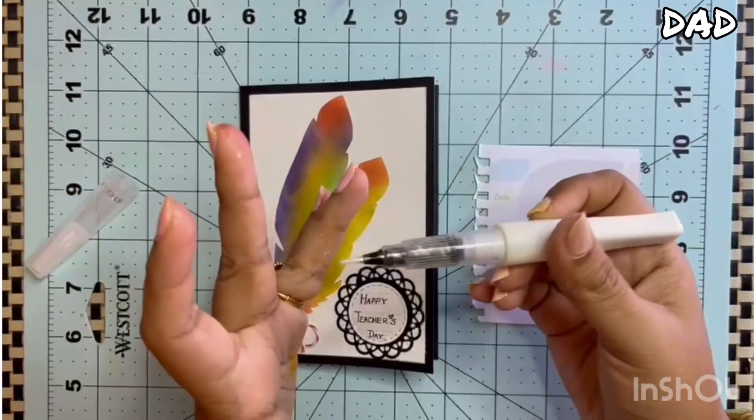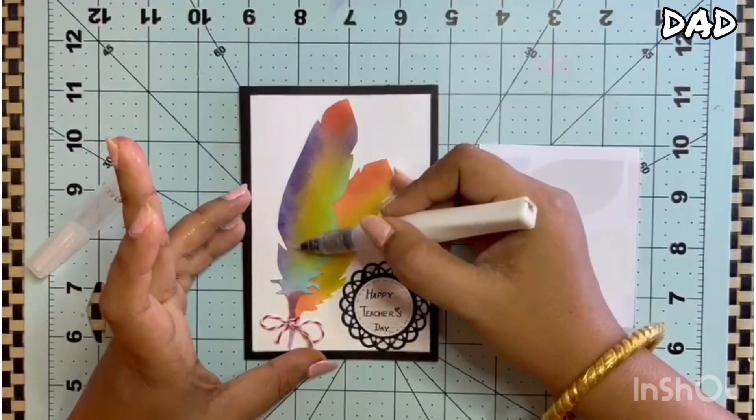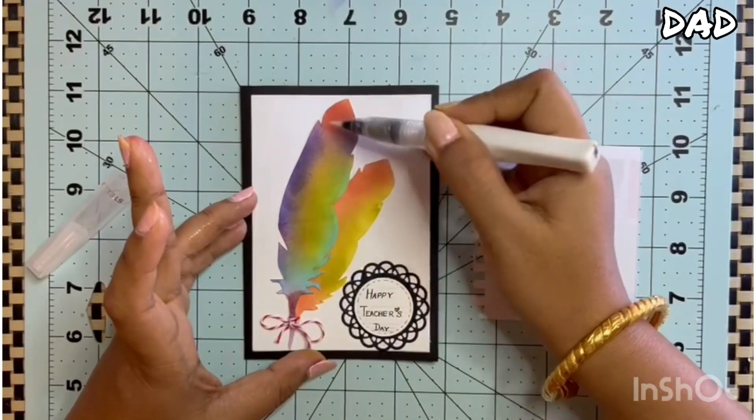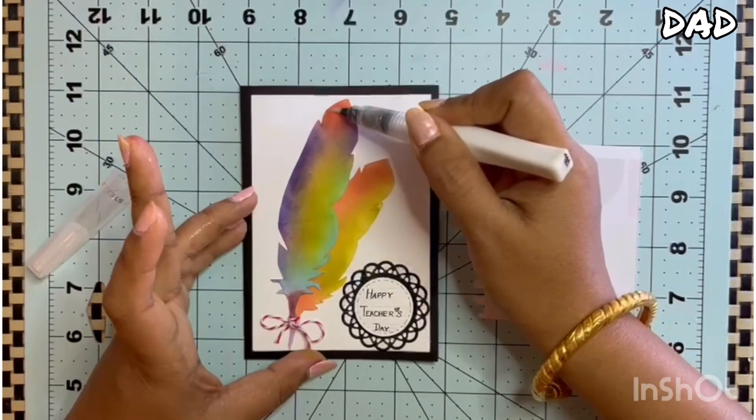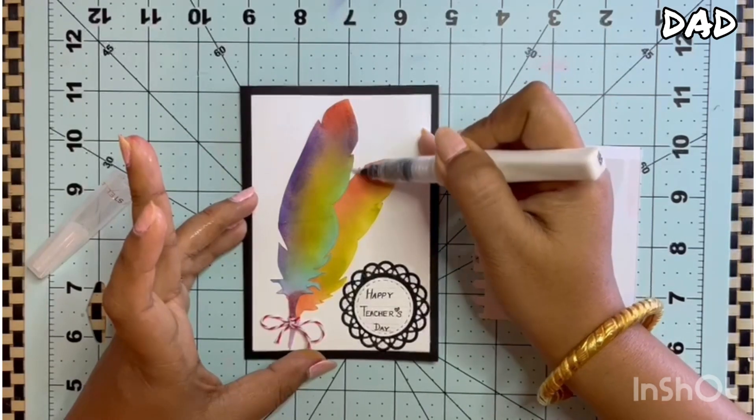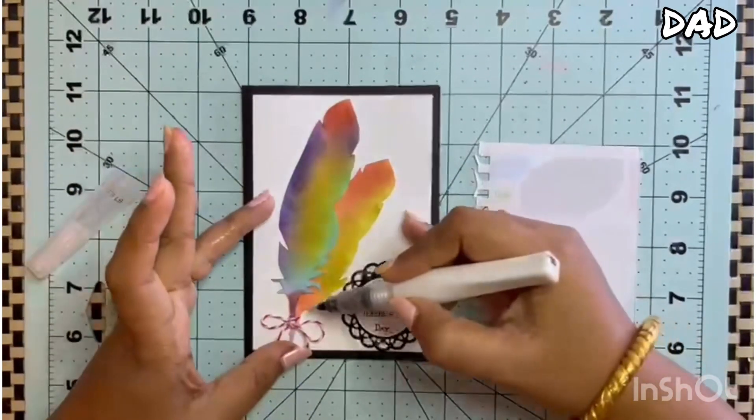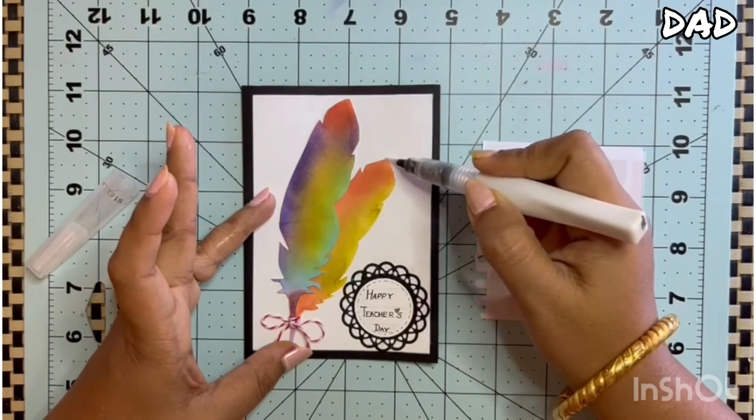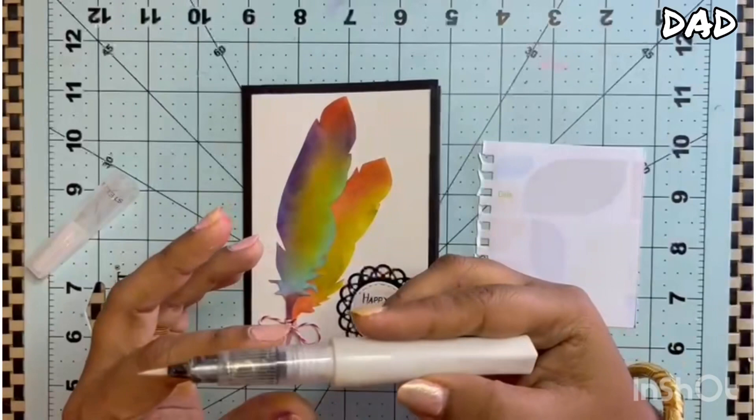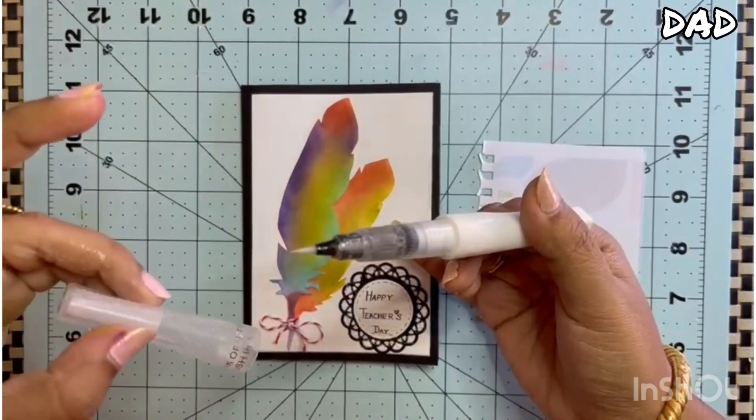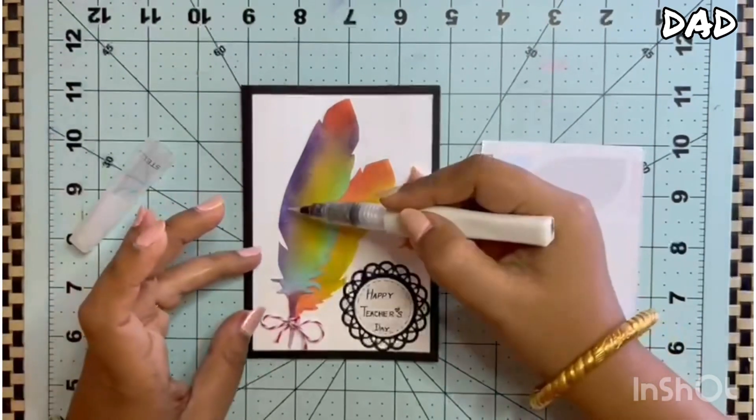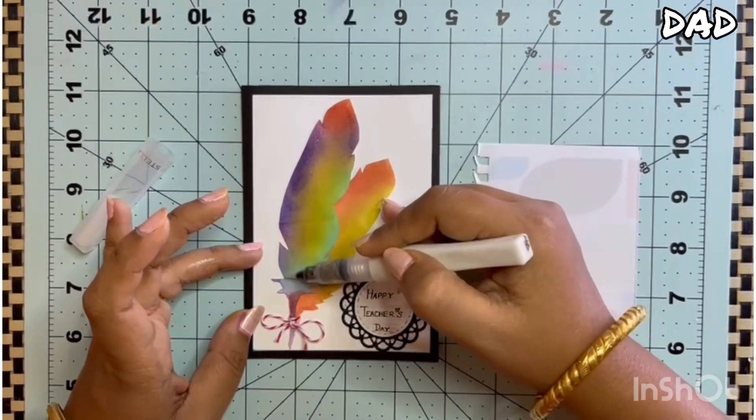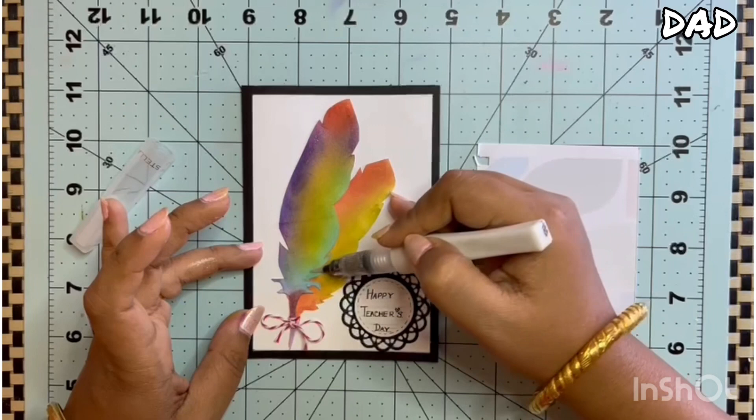This is the glitter, this is transparent glitter one. I will be adding glitters at the edges only and not the inside. This is from Wink of Stella. This is a very nice glitter pen. It gives a very nice shimmery shine.